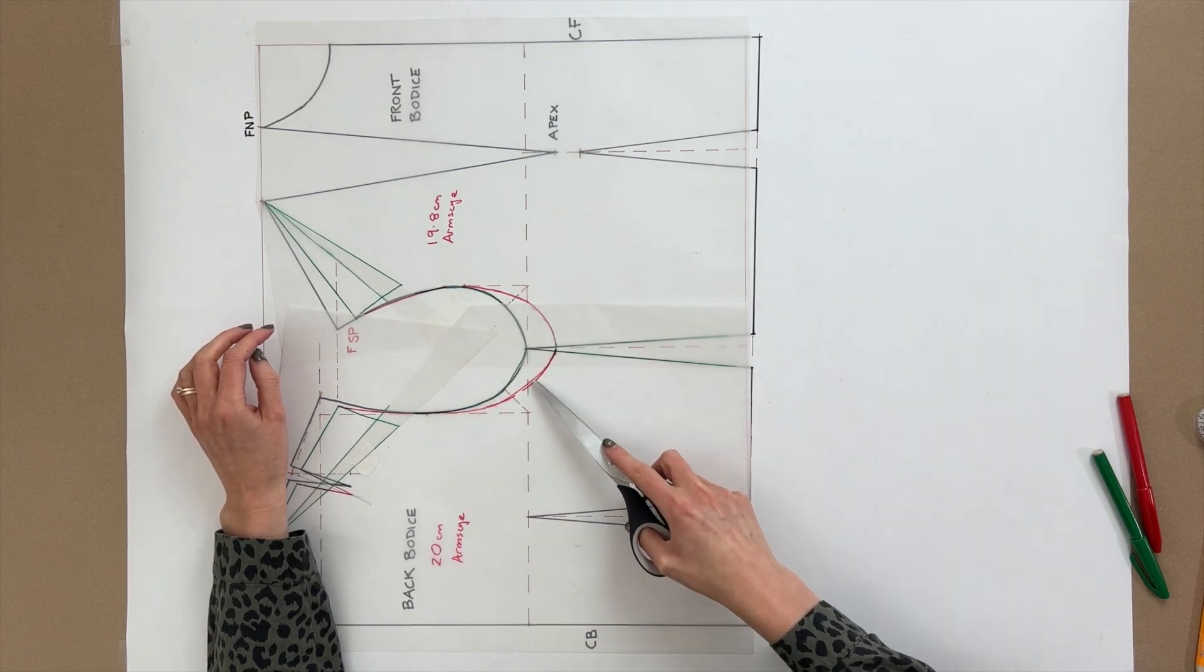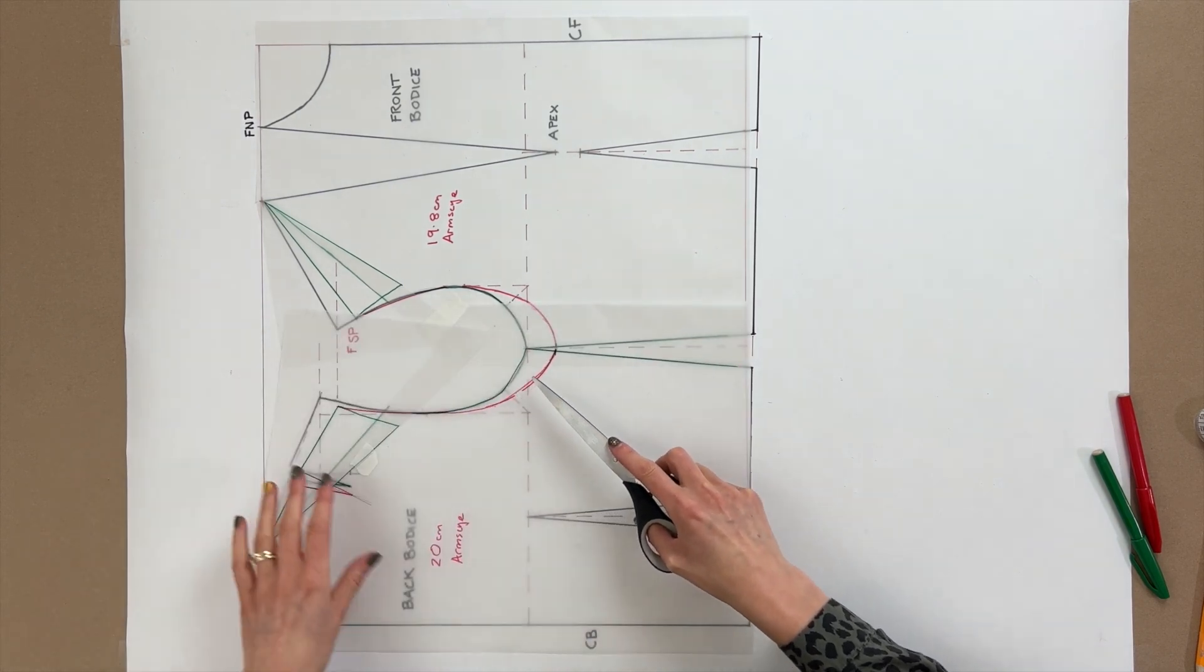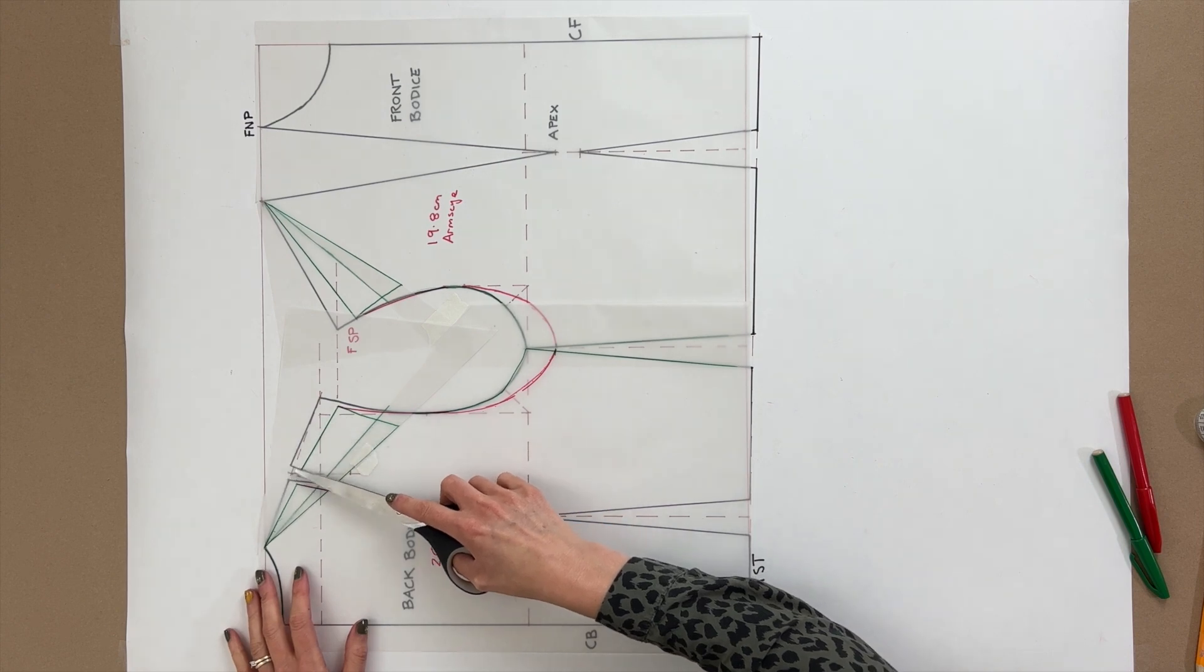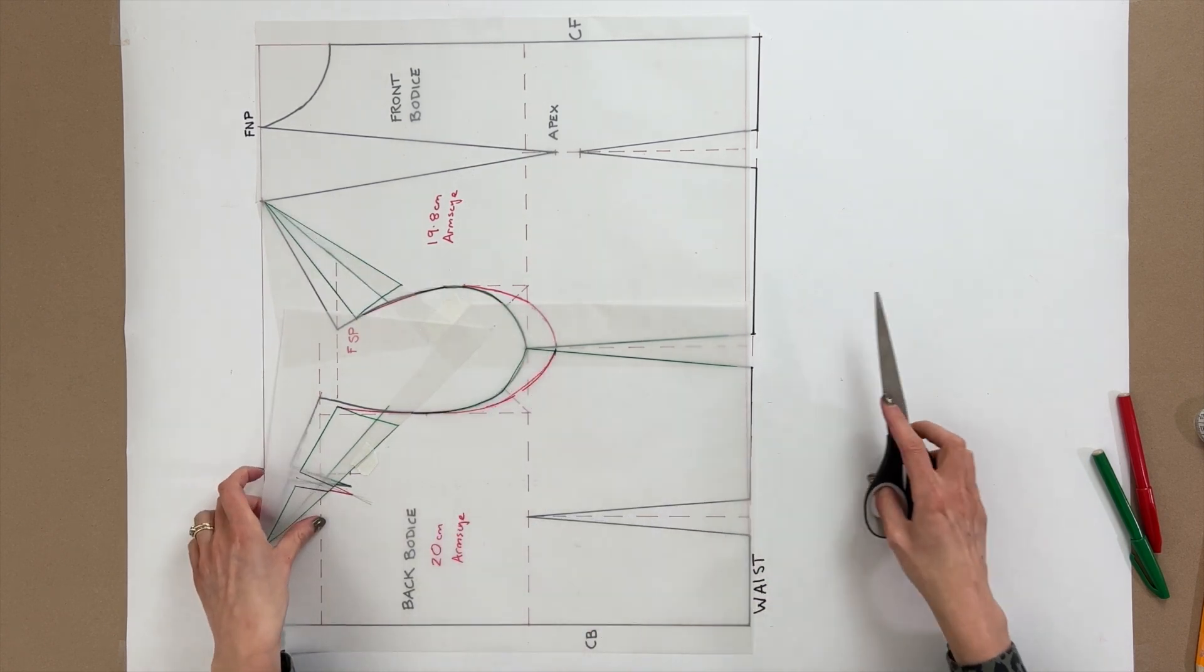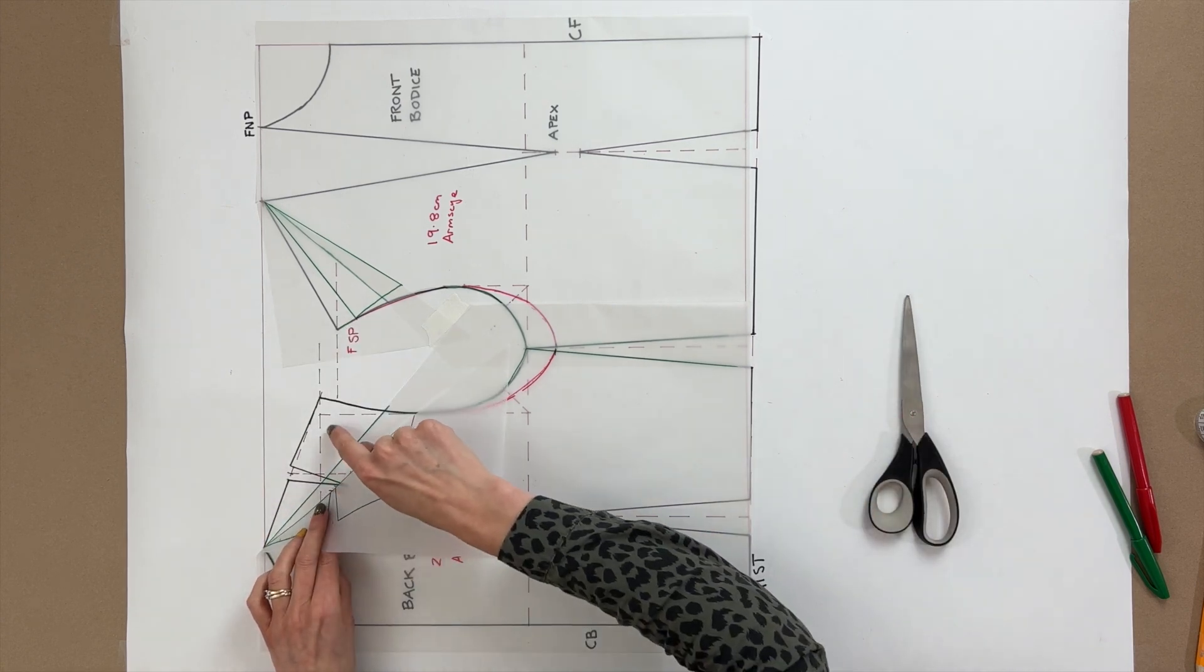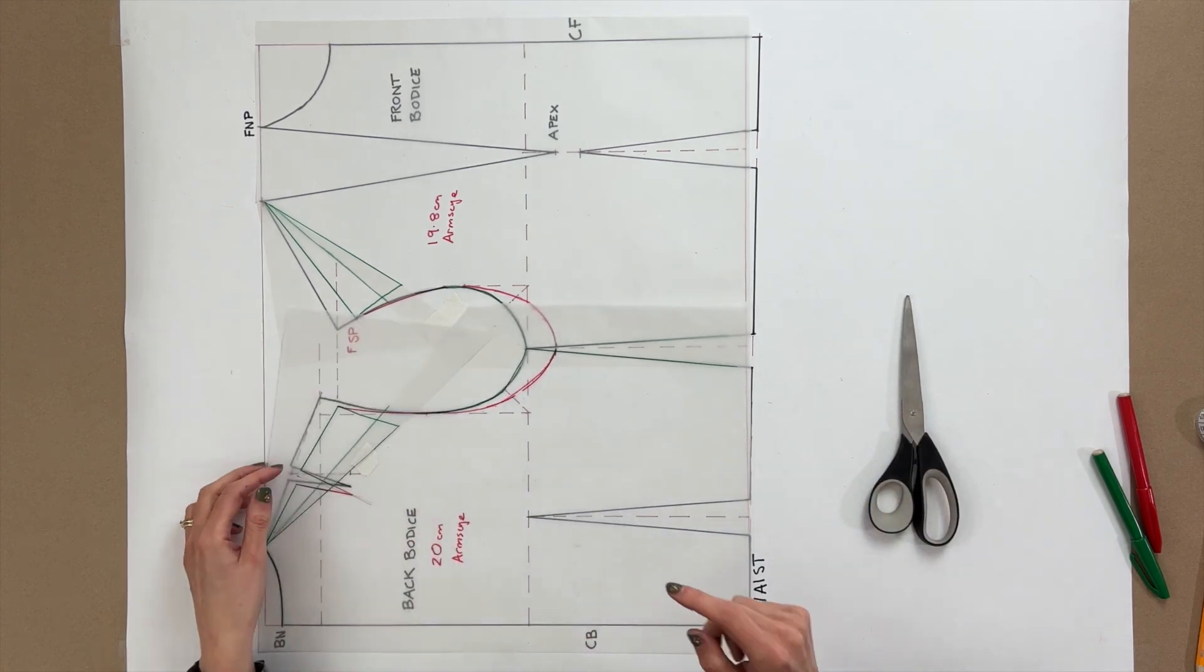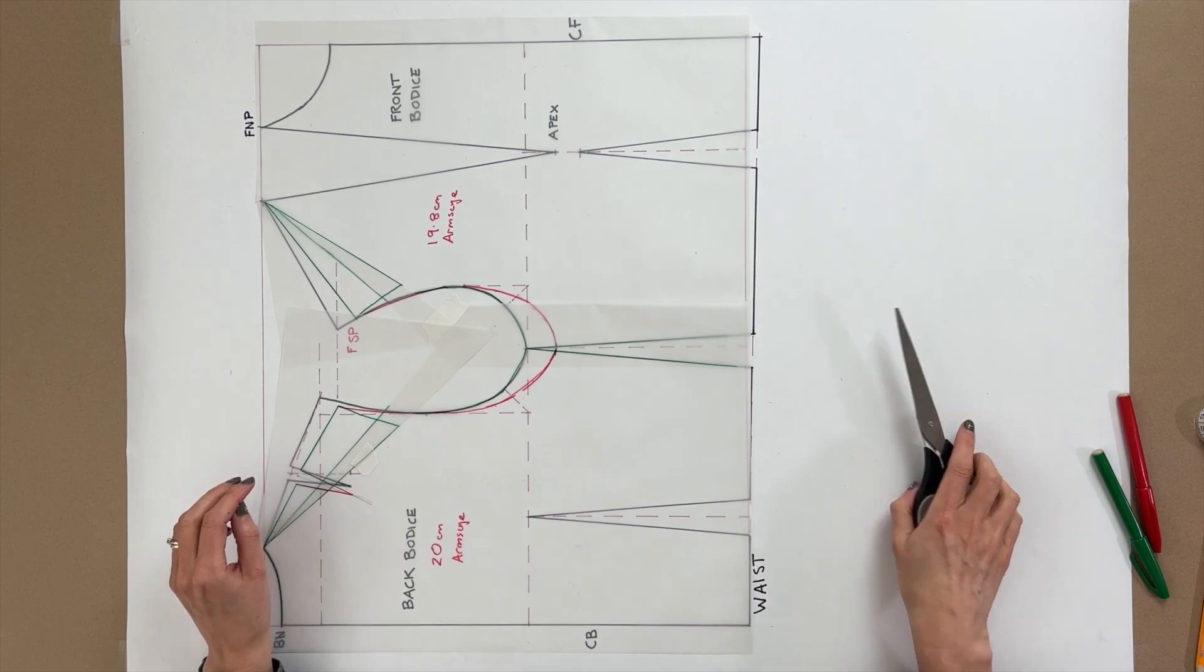So at this point you then want to cut out around your red lines, around the red lines that you've drawn and then your shoulder points as well, your new shoulder line, and then you can trace that and mark it onto your original block using a colored pen or pencil.